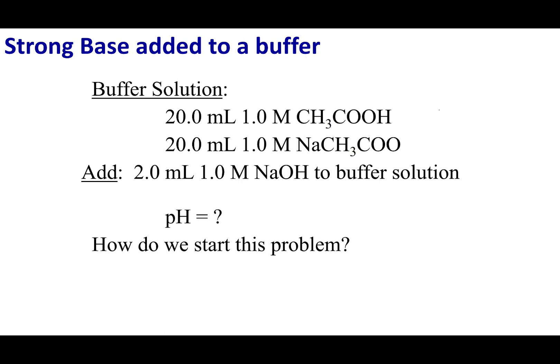The last slide of the last lecture, I asked you to find the pH of the buffer system, and you should have gotten a pH of 4.75. To make your buffer, you use 20 mL of a 1 molar solution of acetic acid and 20 mL of a 1 molar solution of sodium acetate. Now, to this buffer system, we're going to add NaOH.